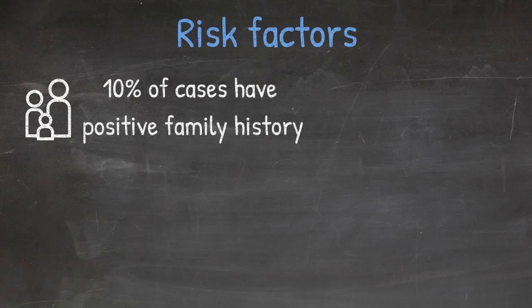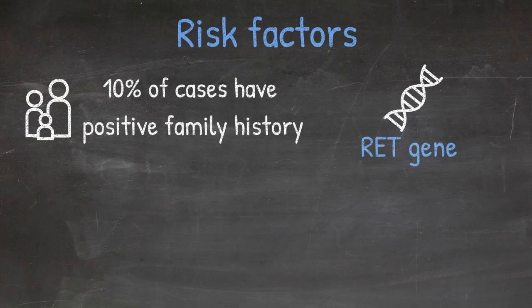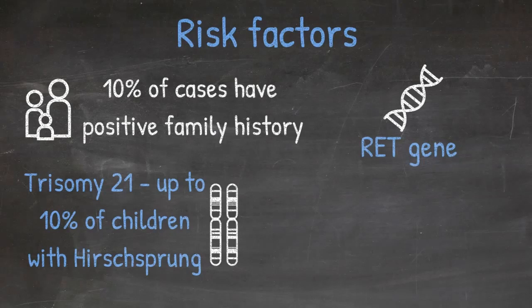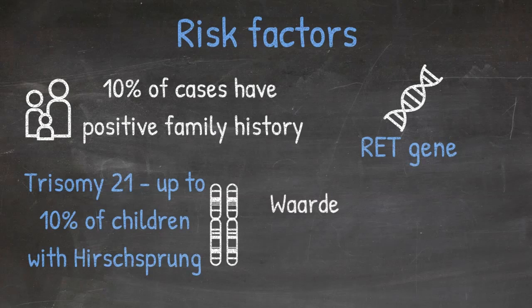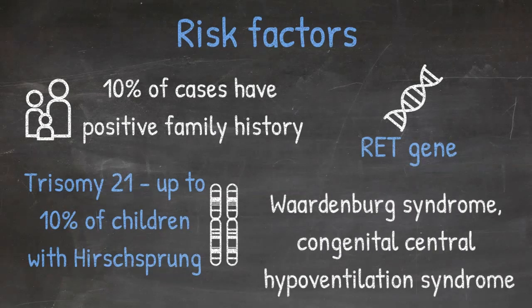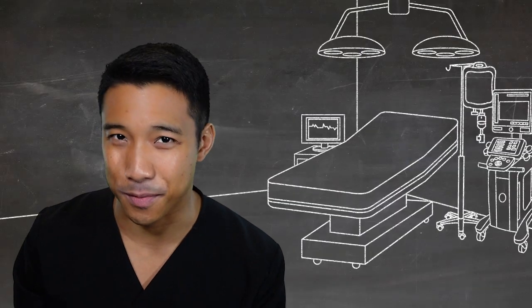Are there any familial associations or risk factors? Unfortunately, about 10% of children will have a positive family history, and this means there are some predisposing genetic conditions such as the RET gene that can go along with that. As many of you know, Hirschsprung disease is associated with trisomy 21, and up to 10% of children with Hirschsprung disease will have trisomy 21, but only one to two percent of patients with trisomy 21 have Hirschsprung disease. There are a few other syndromes that are associated with Hirschsprung disease, including Waardenburg syndrome, congenital central hypoventilation which is known as Ondine's curse, and some others.